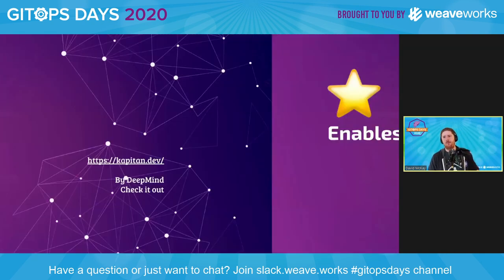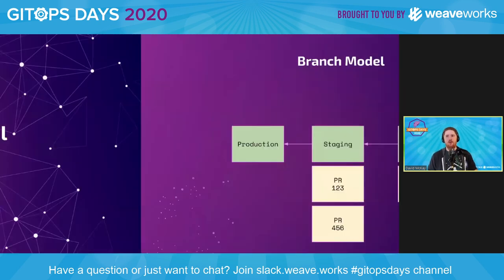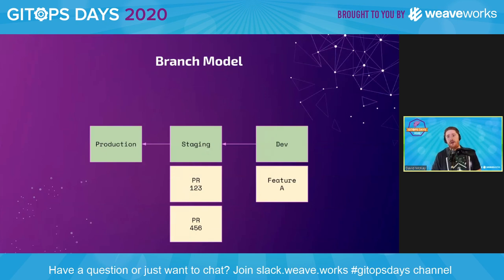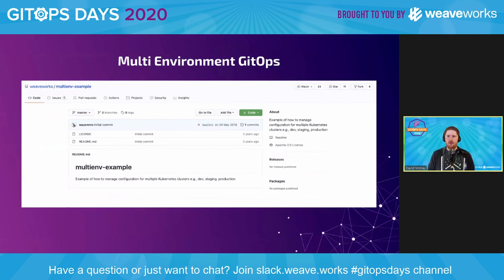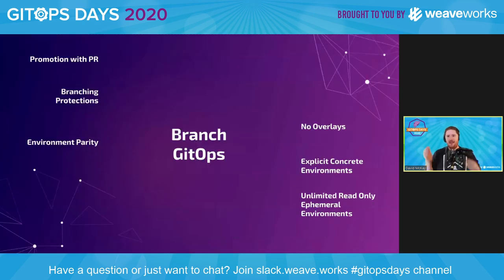All these actionable tips push us on the path to branch-based GitOps where we have concrete environments — dev, staging, and production — and ephemeral environments: every time we work on a new feature or have a PR to staging, we can spin up an ephemeral environment using our concrete environments as a basis. Going back to the Weaveworks example repository, there was actually really good content hidden there — they were trying to approach this path initially. Using branches for development and staging enables no overlays, explicit concrete environments, limited read-only ephemeral environments, environment parity, branch protections, and promotions with PRs.